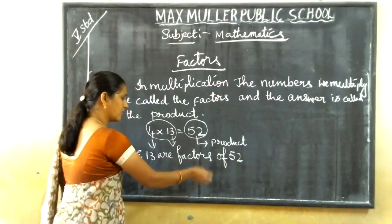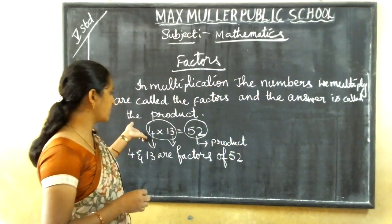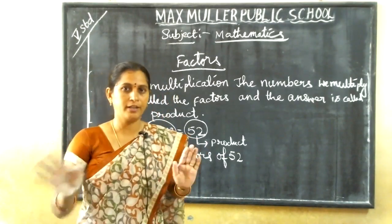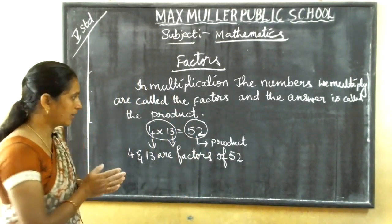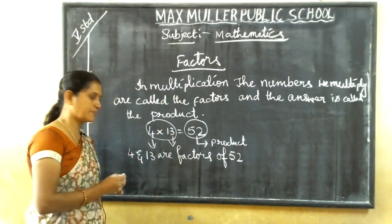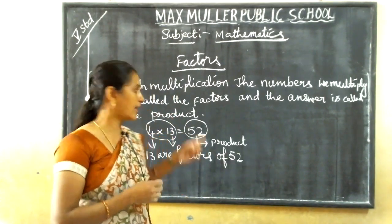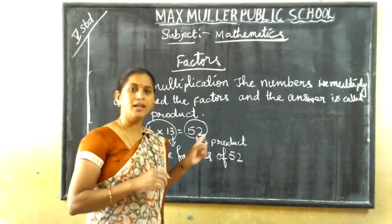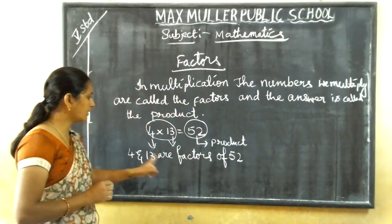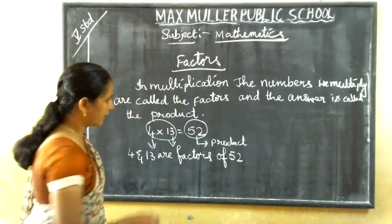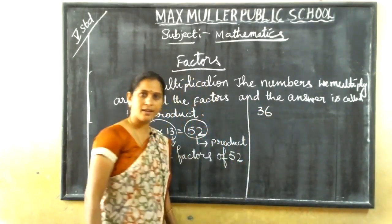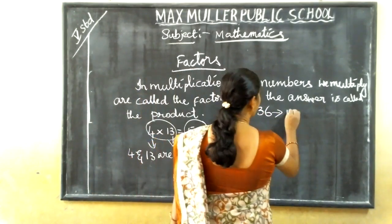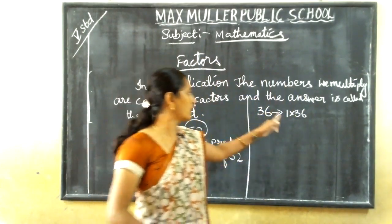Any table — one times thirteen, two times thirteen — those are multiples. But factors means only a few factors. For multiples there is no end, but factors are limited — only a few factors. All numbers will not have the same number of factors. In the fifth standard we study a deep discussion about factors.